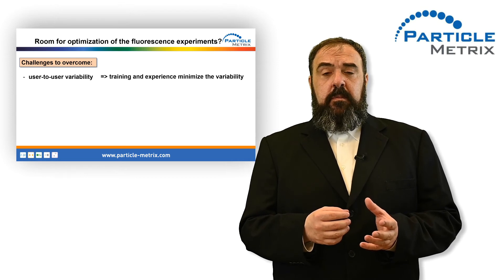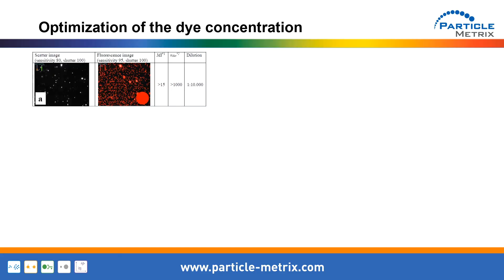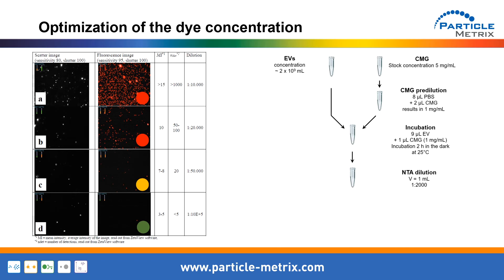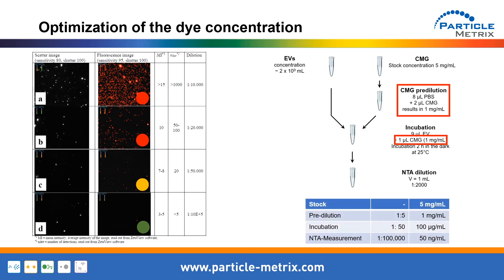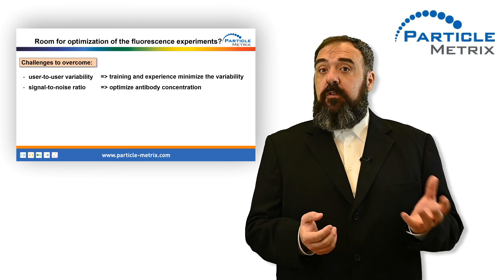The next challenge which needs to be overcome is the low signal-to-noise ratio of FNTA. Staining with fluorescence means adding dye in excess, which in turn means a high amount of unbound dye. It would be good to wash all the free dye away, but unfortunately we are working with very small particles, so washing is a problem — it would cost a lot of time and we would lose a big portion of our particles of interest. The solution is optimizing the dye concentration so that in the final dilution the concentration of the dye is below the detection limit of the detection system. In most cases, pre-dilution of the dye is highly recommended. In this example, the unspecific membrane stain Cell Mask Green requires a pre-dilution of 1 to 5. Optimizing the antibody concentration will help to optimize the signal-to-noise ratio and therefore lower the detection limit.